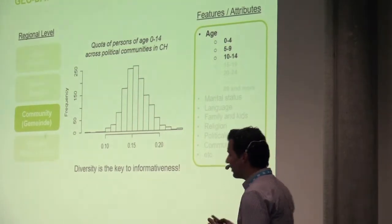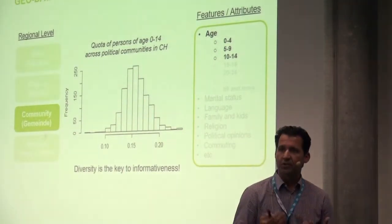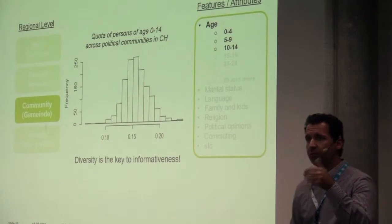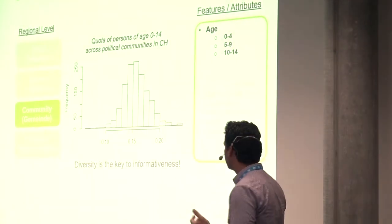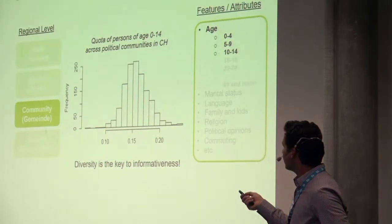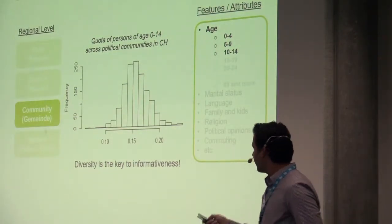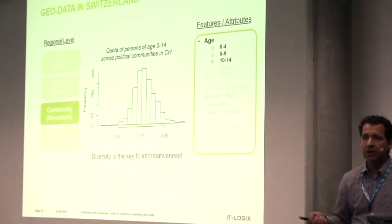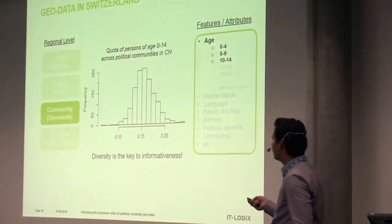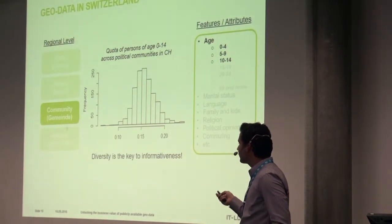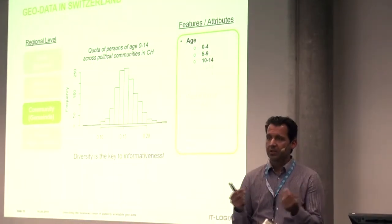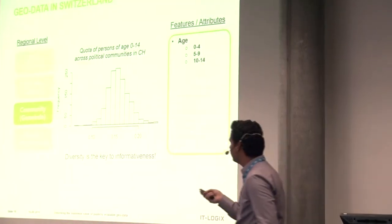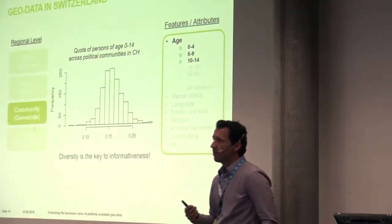The power of this data lies in the diversity across regional levels. For example, if you take the 2,500 political communities and look at the quota of persons between age 0 and 14, you'll see a histogram distribution showing that not all political communities are the same. Some have as little as 10% young people while others have 25%. This diversity is exactly what we exploit to create value.